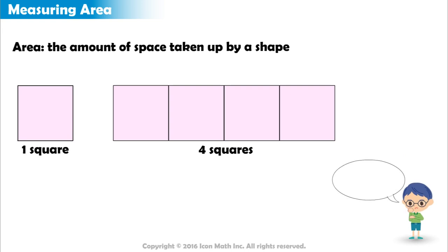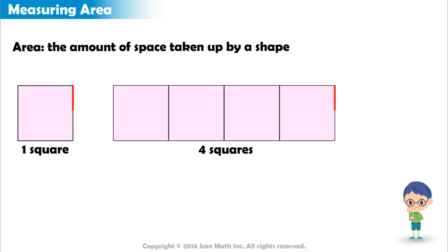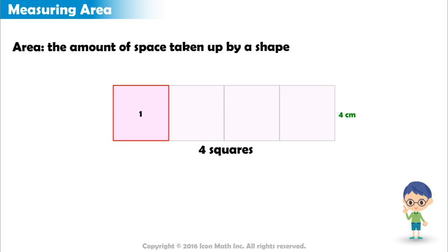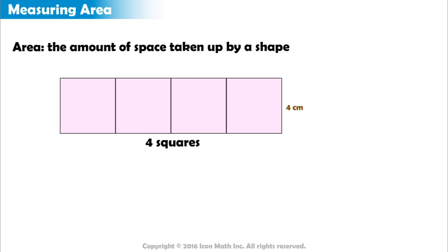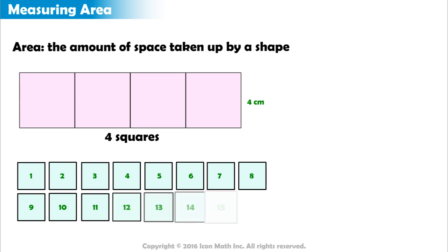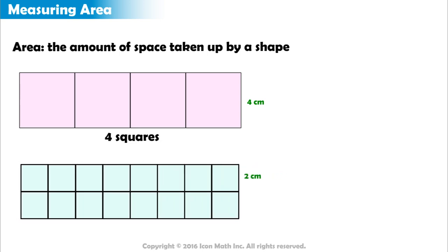But what if someone asks how big is the square we're using? Suppose each of our squares has a side length of four centimeters. So we say that our rectangle is made up of four squares, each with a side length of four centimeters. But we could also use sixteen squares, each with a side length of two centimeters, to make a rectangle that has the same area as the first one.